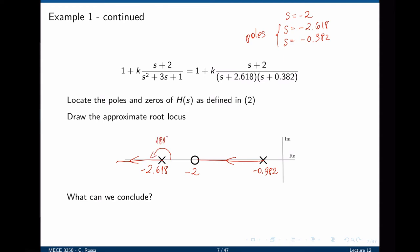Looking at this root locus, we can say that the system is always overdamped, because the roots of the characteristic equation — the poles of the closed loop transfer function — are always real numbers. We can also say that the system is always stable regardless of the value of k, so long as k is greater than zero, because the poles never cross into the unstable region of the s-plane.